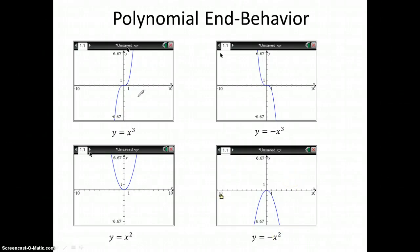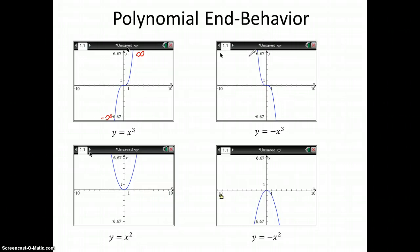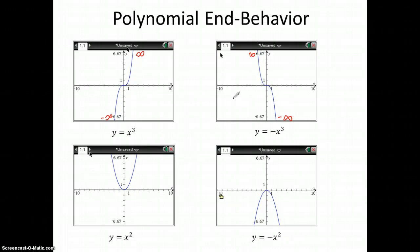Notice that for the x cubed graph, the end behavior is positive infinity as x goes to positive infinity, and as x goes to negative infinity, y goes to negative infinity. But when I reflect it around the x-axis with this negative in front, it's going to go to positive infinity as x goes to negative infinity, and y is going to go to negative infinity as x goes to positive infinity. Reflecting it is going to change the end behaviors to quite their opposite.